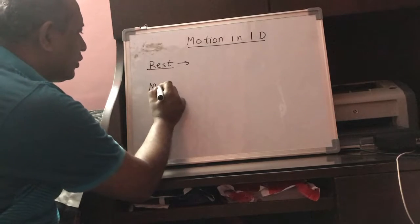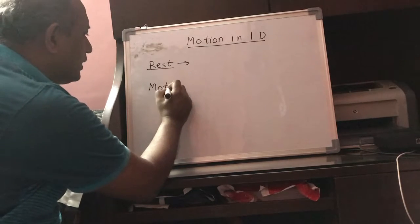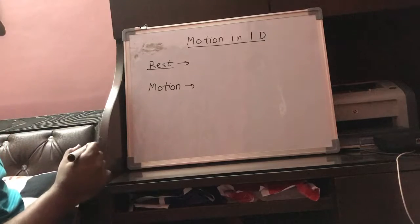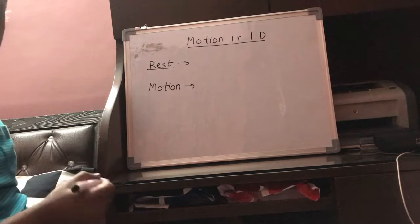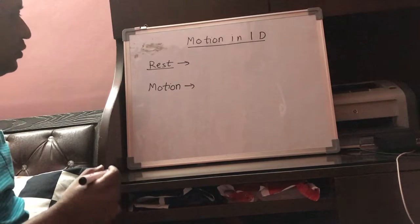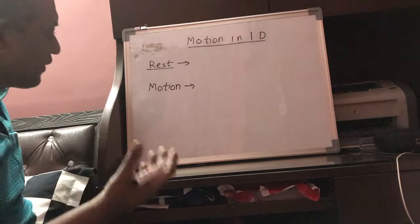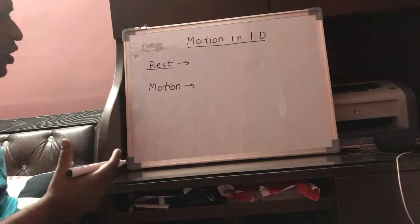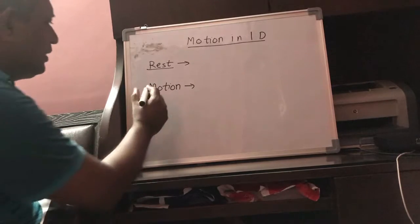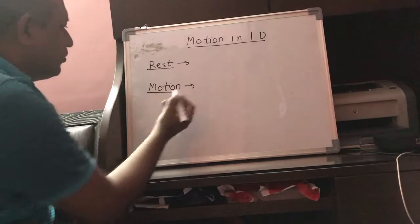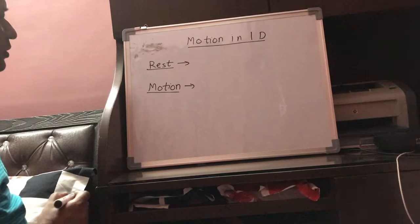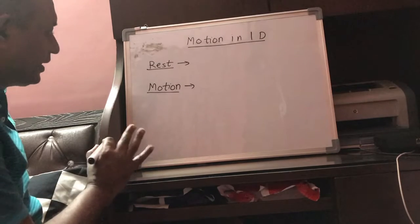The second concept related to this is motion. When an object changes its position with respect to a fixed reference point or with respect to its surroundings, then it is said to be in motion.